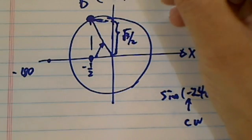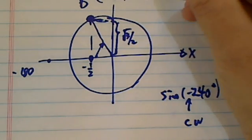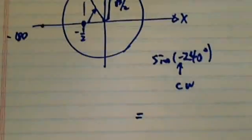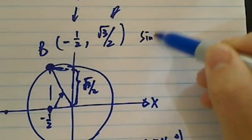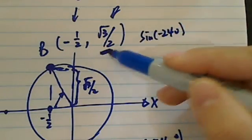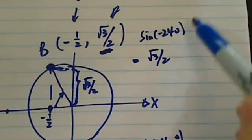So here's our cosine value. Here's our sine value. So sine of minus 240, I'm looking for the y value. So it's radical 3 over 2. It's pretty easy to do.